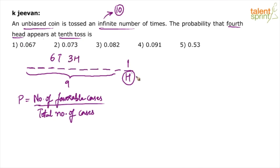This head at the 10th toss is the 4th head. So obviously, before the 10th toss, there were 3 heads and 6 tails. In how many ways can we fill these 9 positions? There are 9 positions with 6 tails and 3 heads — there are multiple ways. For example: head, head, head, tail, tail, tail, tail, tail, tail. Or: head, tail, head, tail, head, tail, tail, tail, tail — and so on.